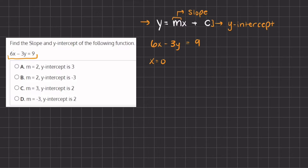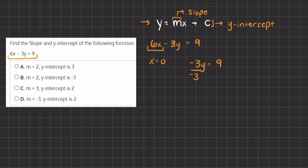If we set x to equal 0, this term cancels out and we are left with negative 3y equals 9. In order to find the y-intercept, we isolate y by dividing by negative 3 on both sides, so our y-intercept equals 9 divided by negative 3, which gives us negative 3.